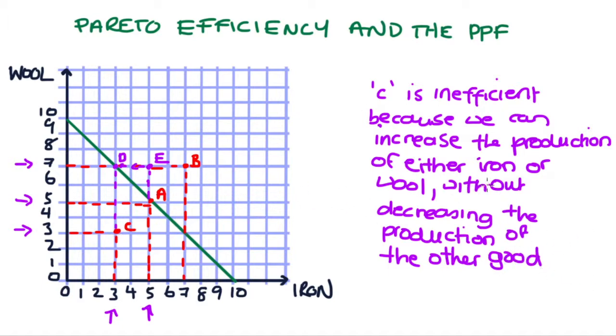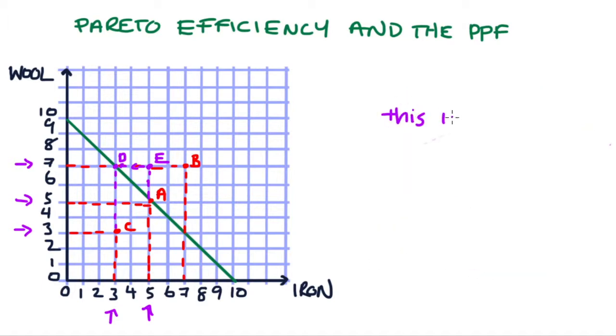And so this is true for all of the points to the left hand side of the PPF. They are inefficient in this way because there's some sense in which we can increase the production of either of our goods without having to decrease the production of the other.